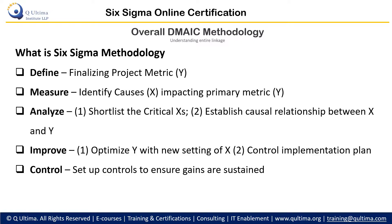Measure is identifying causes which impact our primary metric or project metric. Analyze is to shortlist critical Xs and establish a causal relationship between X and Y. In improve, we optimize Y on new settings and create a control implementation plan. Finally, in the control phase, we set up controls to ensure the gains are sustained.